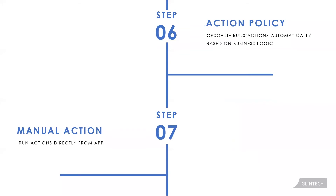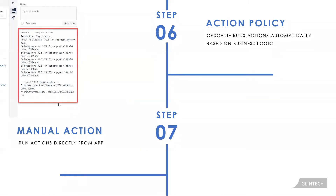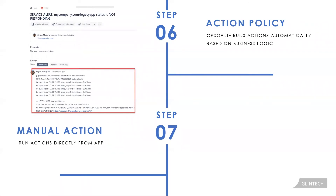For this particular type of issue, your team has said that whenever an alert is generated containing 'not responding' or 'down,' they want to confirm if the server is up by pinging it. An action policy has been set up to automatically ping the server to confirm if it's actually down or under high load. The result was automatically added to the notes section — our server is responding — and that note was also passed to the Jira issue to enrich it, and the Slack channel was updated to show what action was taken.